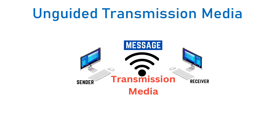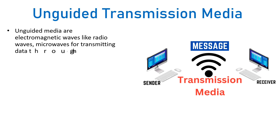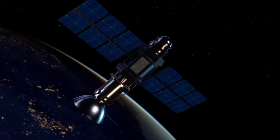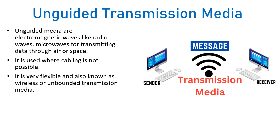Unguided transmission media are wireless transmission media that do not use cables for transmitting data. They use electromagnetic waves like radio waves or microwaves to transmit data through air or space. Unguided media are used in places where cabling is hard or not possible, and in networks that cover large areas. They are very flexible and also known as wireless or unbounded media. Types include radio waves, microwaves, infrared, Bluetooth, Wi-Fi, and more.